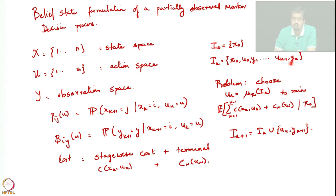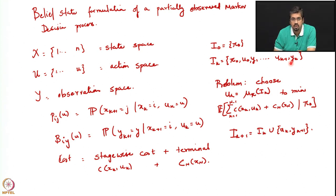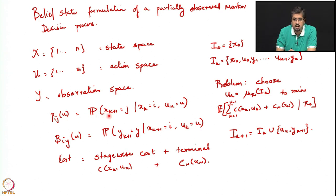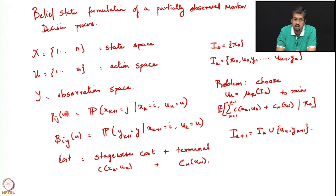The only difference from the linear quadratic problem formulation is that the linear quadratic problem had an explicit form for the dynamics. But as noted, in the case of perfect state information as well, any of these forms are interchangeable — one can always write out the problem where the dynamics are given in terms of a probability kernel or in terms of an explicit dynamical equation. These are theoretically equivalent.